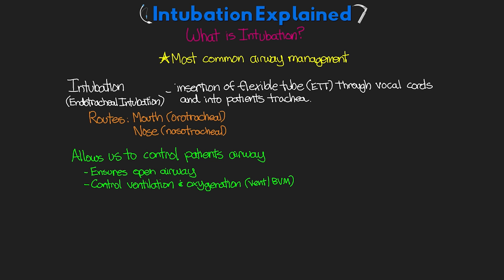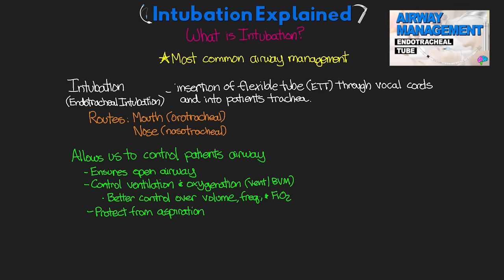Having an endotracheal tube in place gives us much better control over the volume of breaths, so our ventilation, the frequency of those breaths, as well as the percentage of oxygen that we're delivering to them. Also, having this tube in place fully secures the patient's airway and protects it from aspiration. Make sure and watch the previous lesson on endotracheal tubes if you haven't already, as I discuss some of this stuff over there.